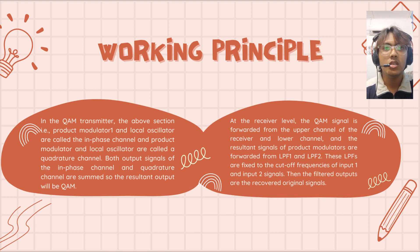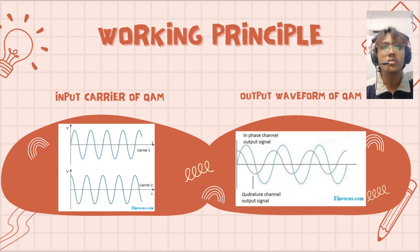At the receiver level, the QAM signal is forwarded from the upper channel of the receiver and lower channel. The resultant signals are product modulated and forwarded from LPF1 and LPF2. These LPF are fixed to the cutoff frequencies of input 1 and input 2 signals. Then the filter outputs are recovered original signals. This is the input carrier of QAM and output waveform of QAM.